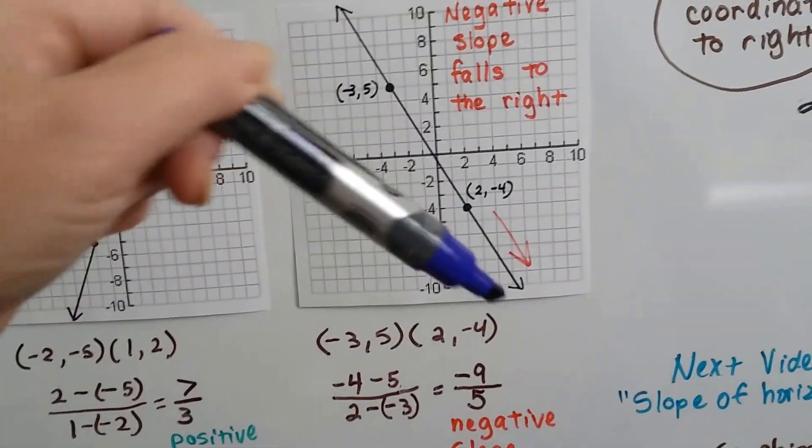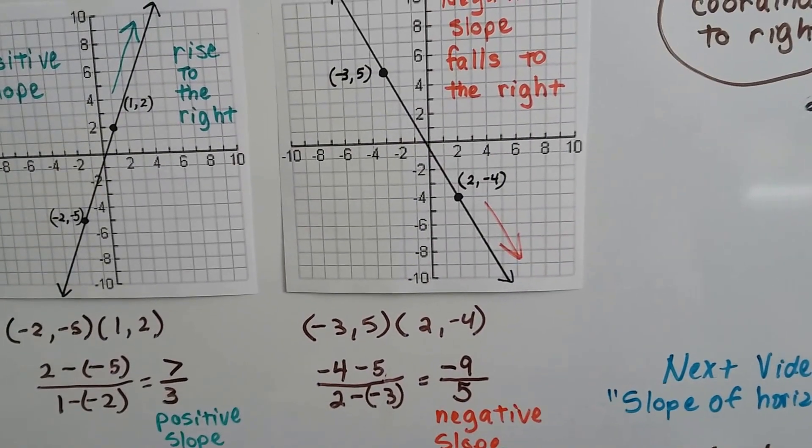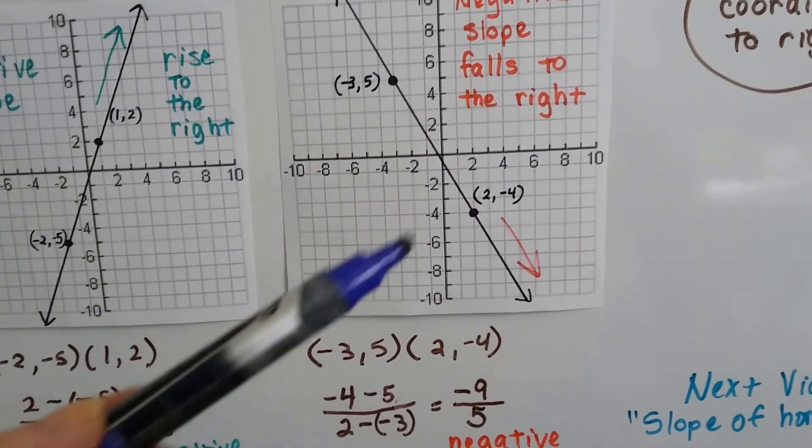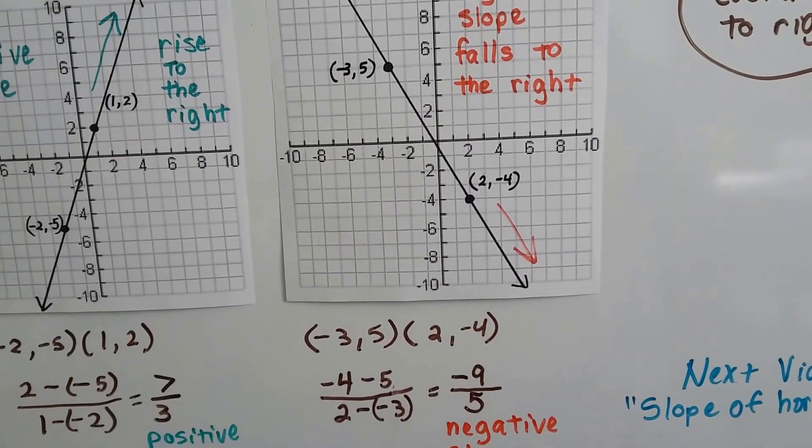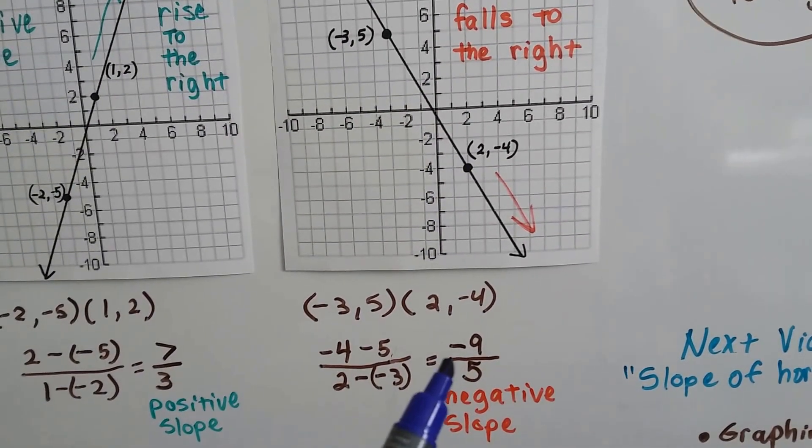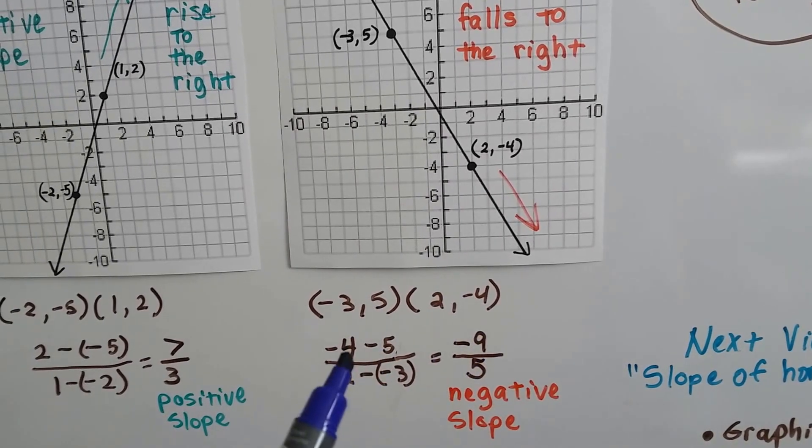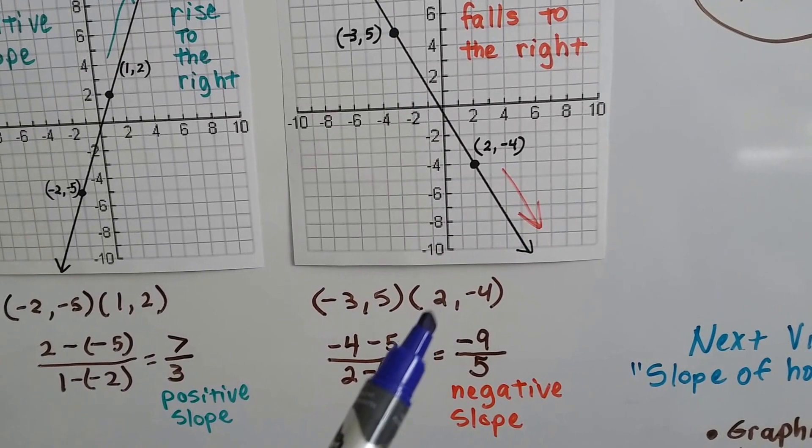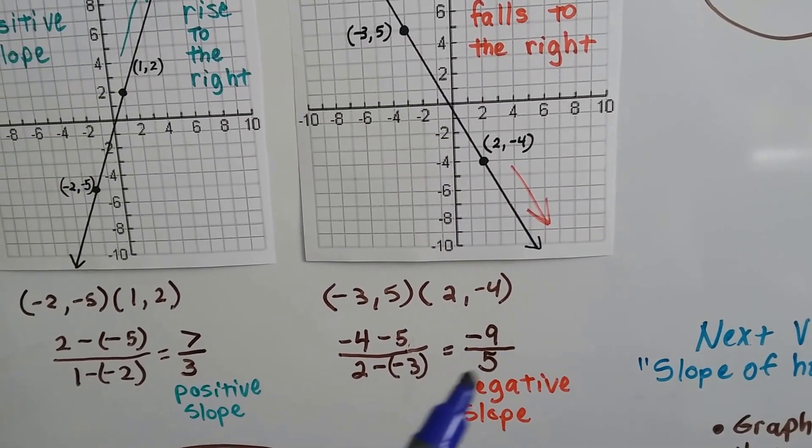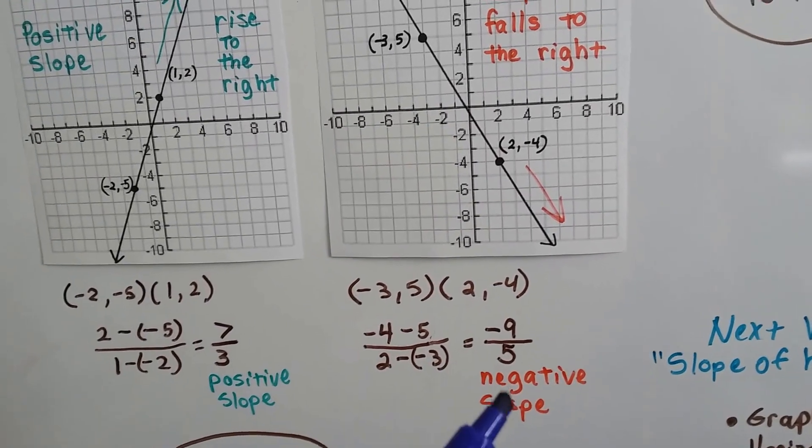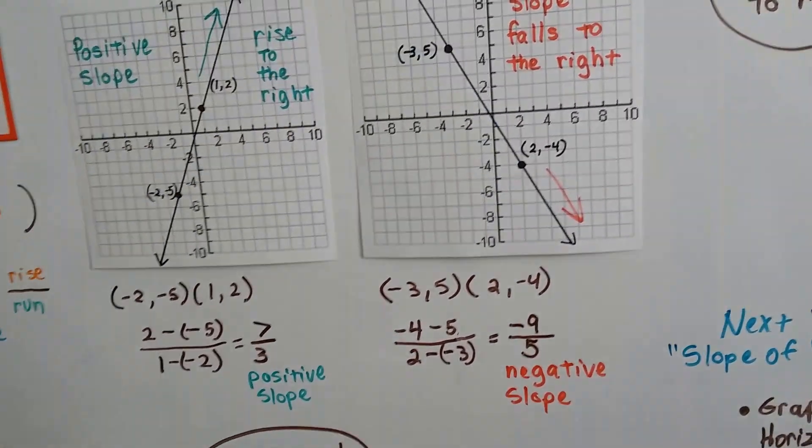Now, when it's falling to the right, we're going to end up with a negative slope. So our ordered pairs from left to right are negative 3, 5, and positive 2, negative 4. And when we do the y2 minus y1, we get negative 4 minus 5. That's a negative 9. And we get 2 take away negative 3. That gives us a 5. And it's a negative 9 fifths. We ended up with a negative slope. It's a negative number.